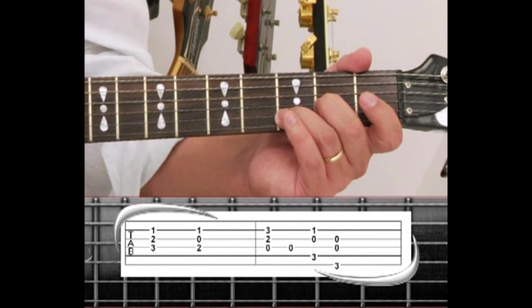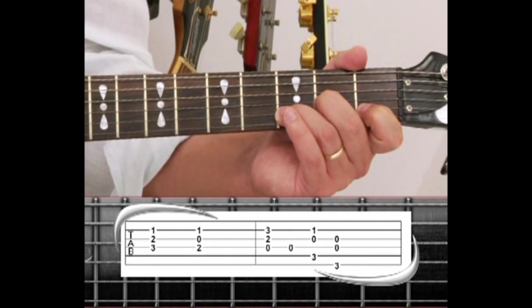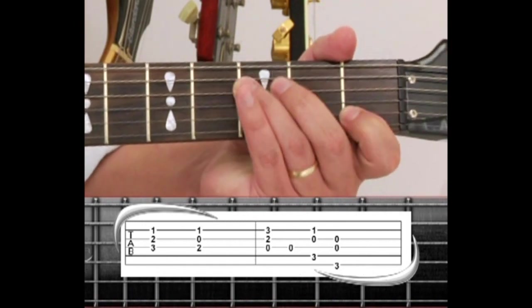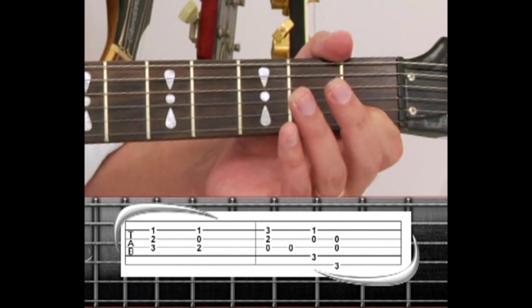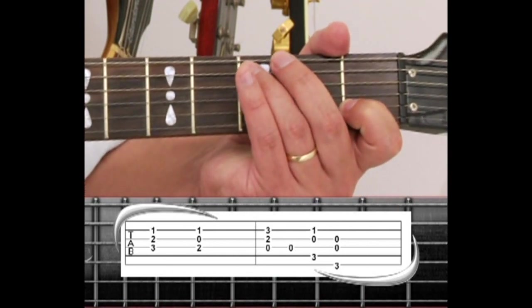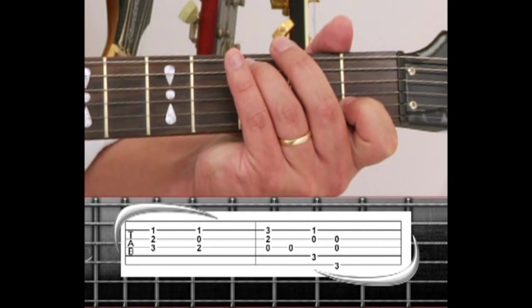While you play this D5, keep your index finger on the second string first fret for the next chord, which is an open C5. Second string first fret, third string open, fourth string is muted with your ring finger, which holds the fifth string third fret. And end on a G5.